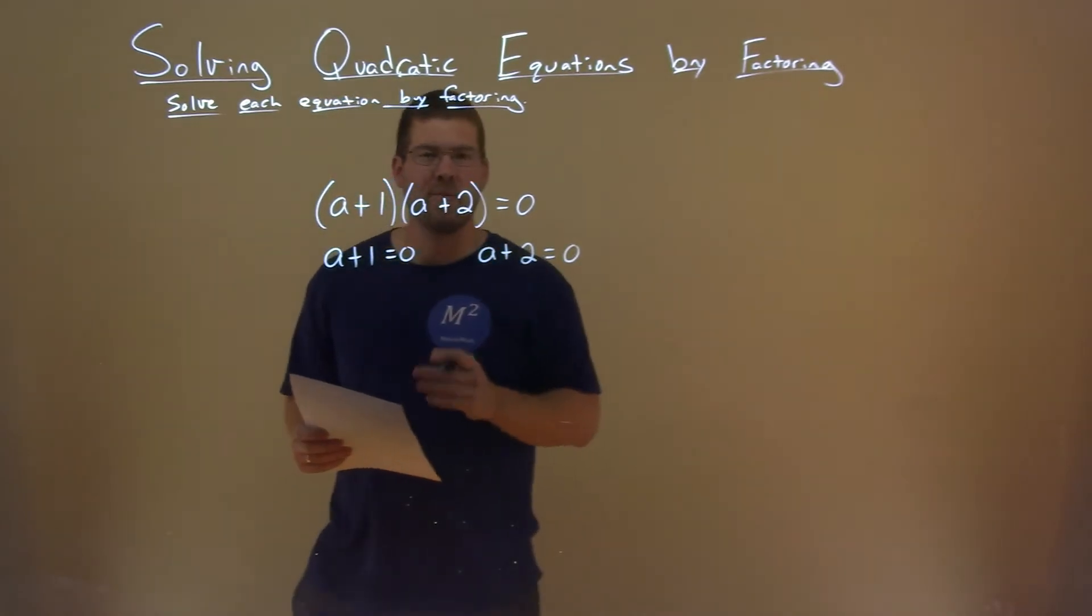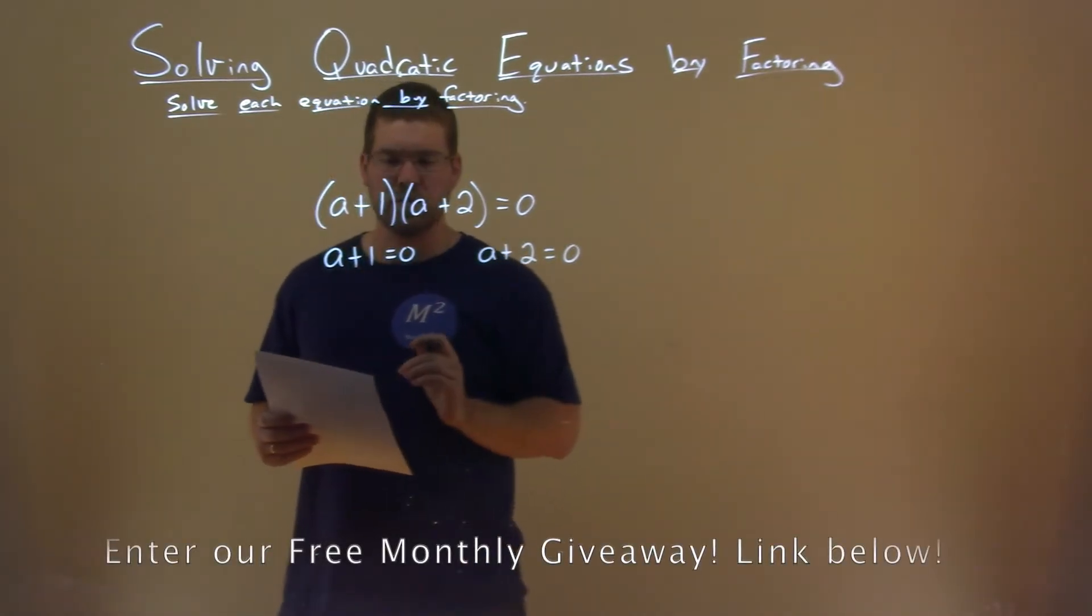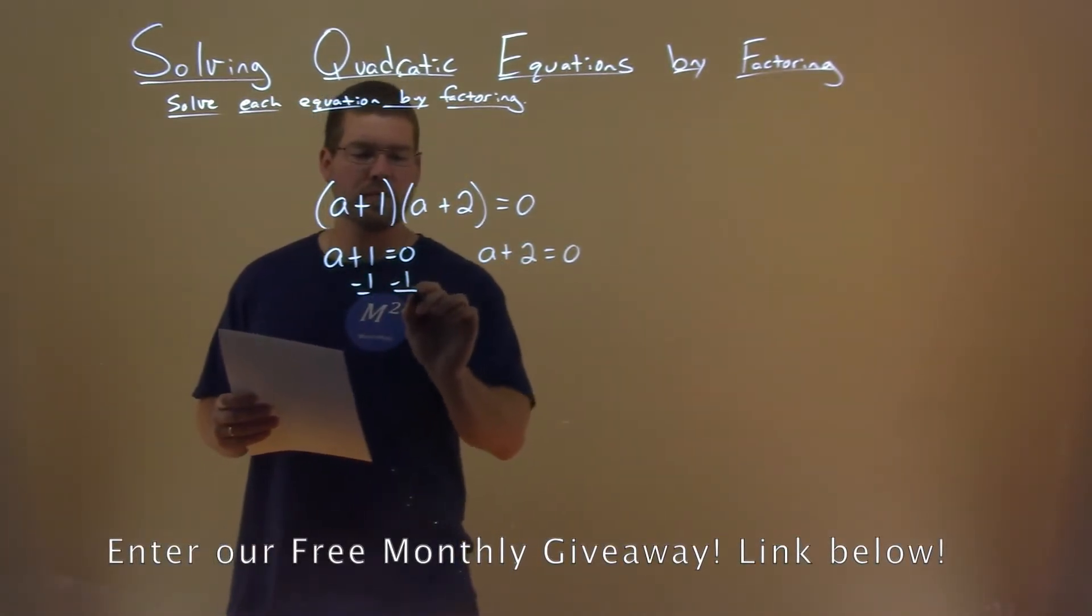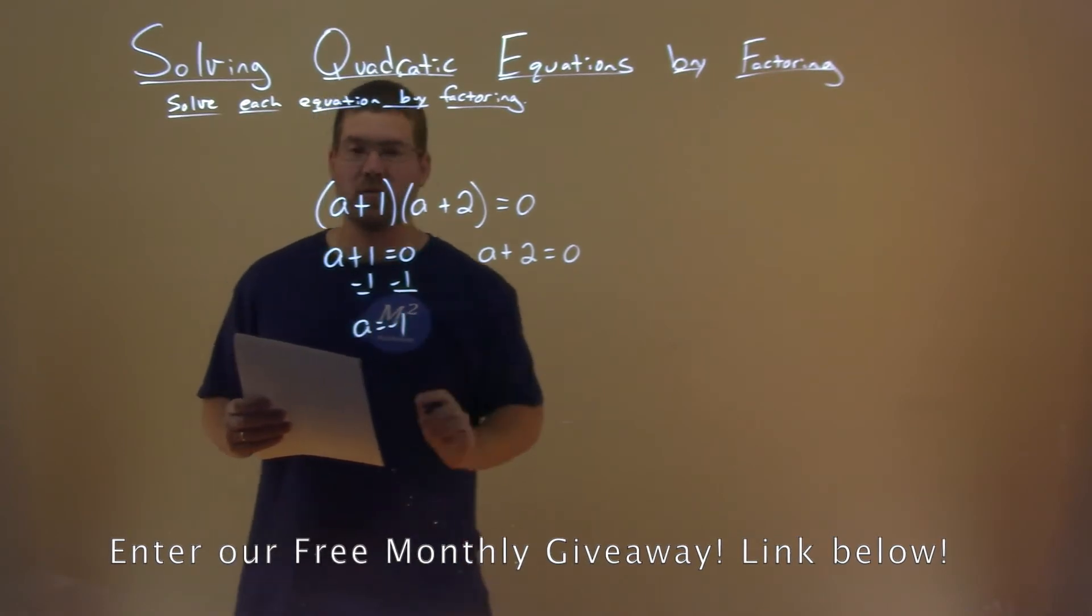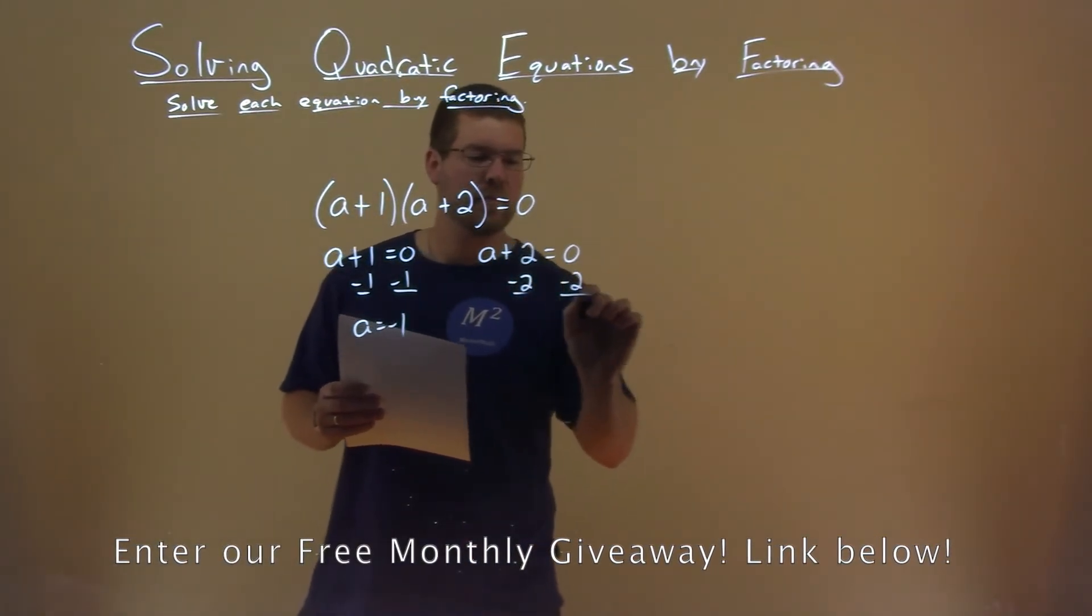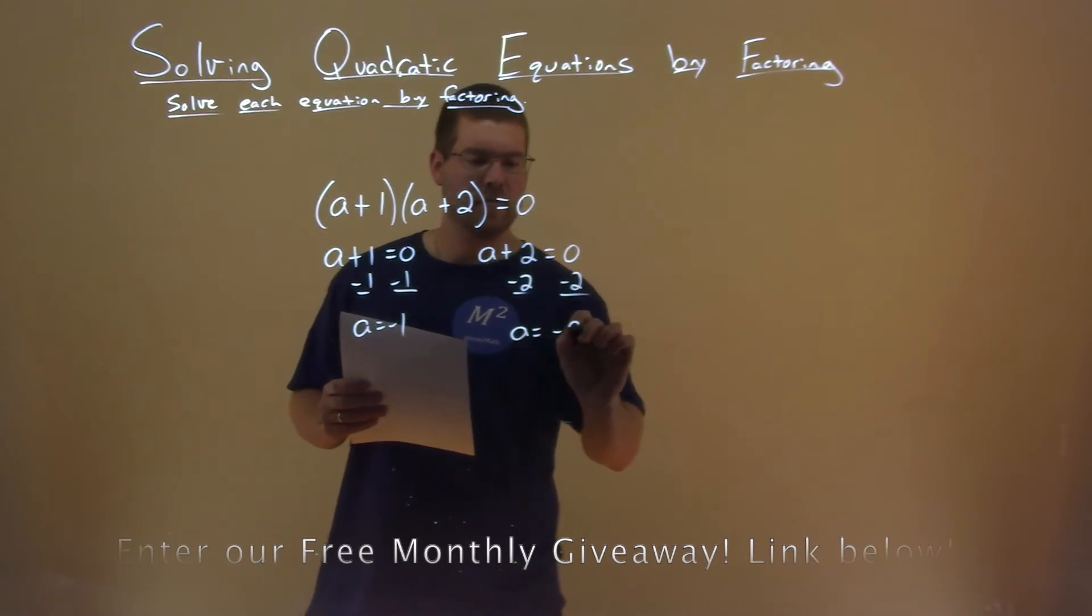And now that we have that we can solve each one of these individually. Subtract one from both sides and a equals negative one.